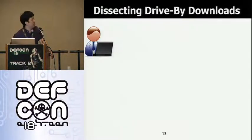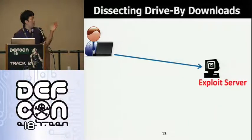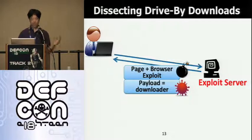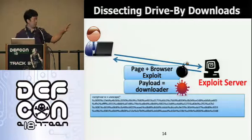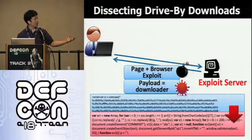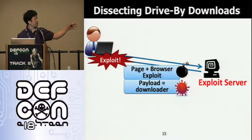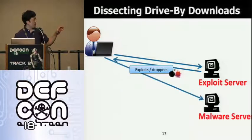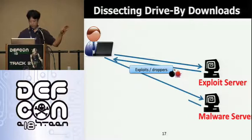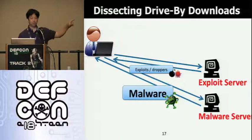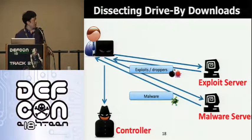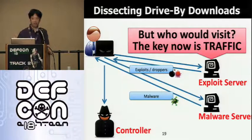Let's dissect drive-by-downloads. The visitor links to an exploit server. The exploit server serves a legitimate page but includes a browser exploit and a payload, or what we call a downloader. The exploit is usually obfuscated, and when it executes it will de-obfuscate itself and exploit the browser. At that point the dropper — the payload or shellcode — will execute and cause the browser to link back to the malware server. The malware server, which is usually different from the exploit server, will distribute malware back. Finally, the malware will link to a CNC. That's basically the attack — very simple.